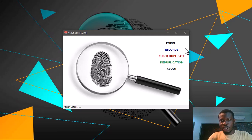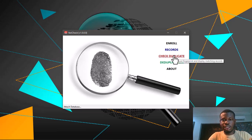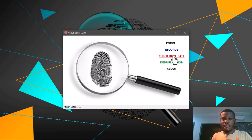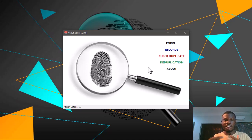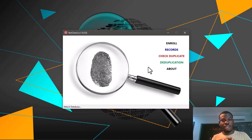These are the functionalities I was able to build: you can enroll a finger, you can view the records, and you can check for duplicates. The check-for-duplicates feature takes one finger and goes through the records in the database to see if there is a duplicate. The deduplication feature loops through all the records and if there's a duplicate, it shows you — so you can decide what to do with it.